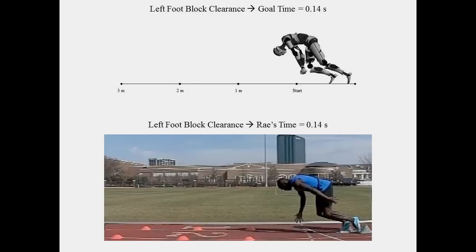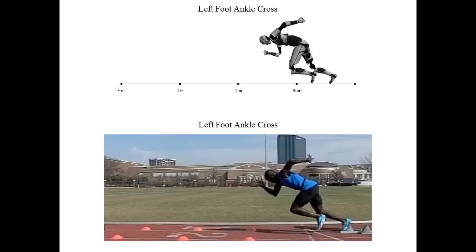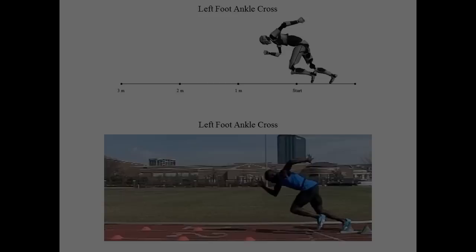Next, we will look at when the left ankle crosses the right knee. Most of his angles look pretty similar to the model, although his left foot is slightly too high off the ground. A lower carry-through may be beneficial.